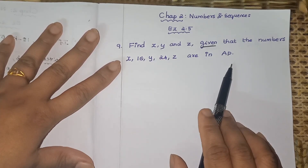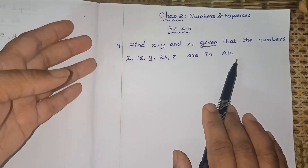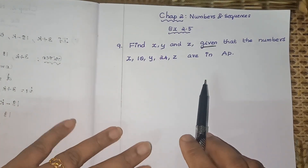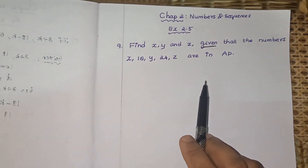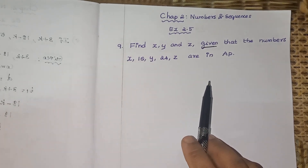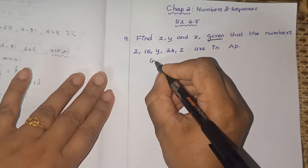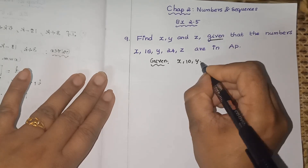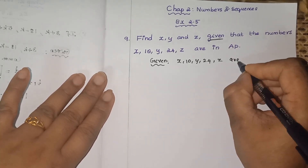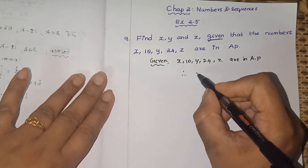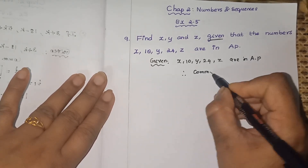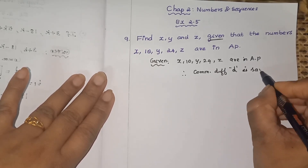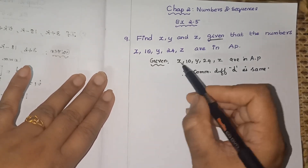Since these terms are in AP, you know that when numbers are in AP, their common difference is the same. Using that as a hint, we are going to find the values of x, y, and z. Given x, 10, y, 24, z are in AP, therefore the common difference d will be the same.